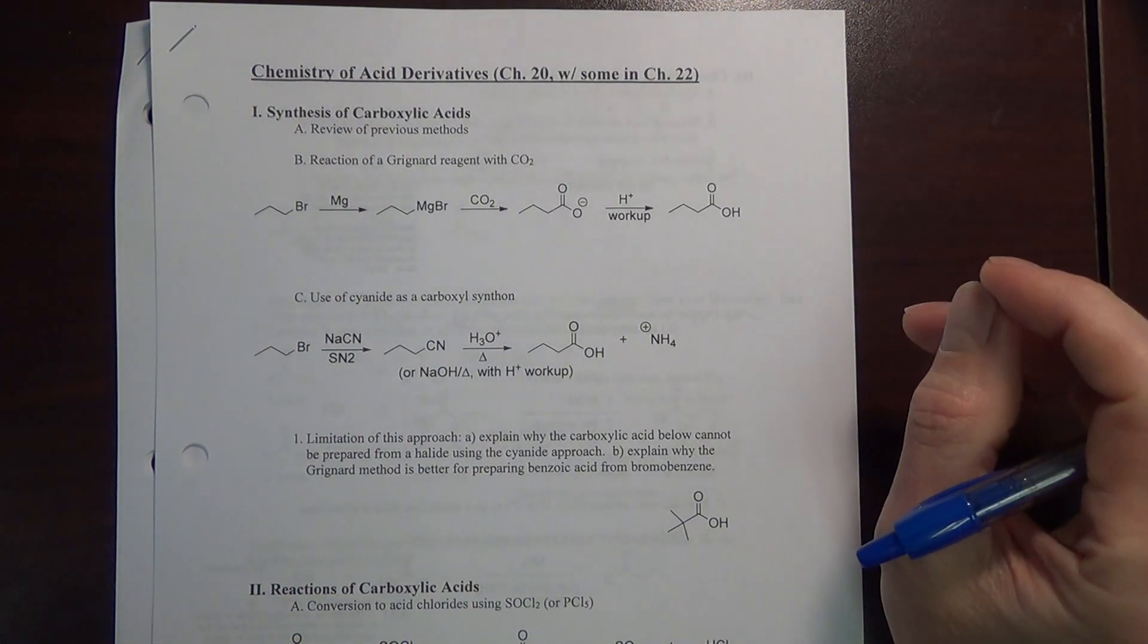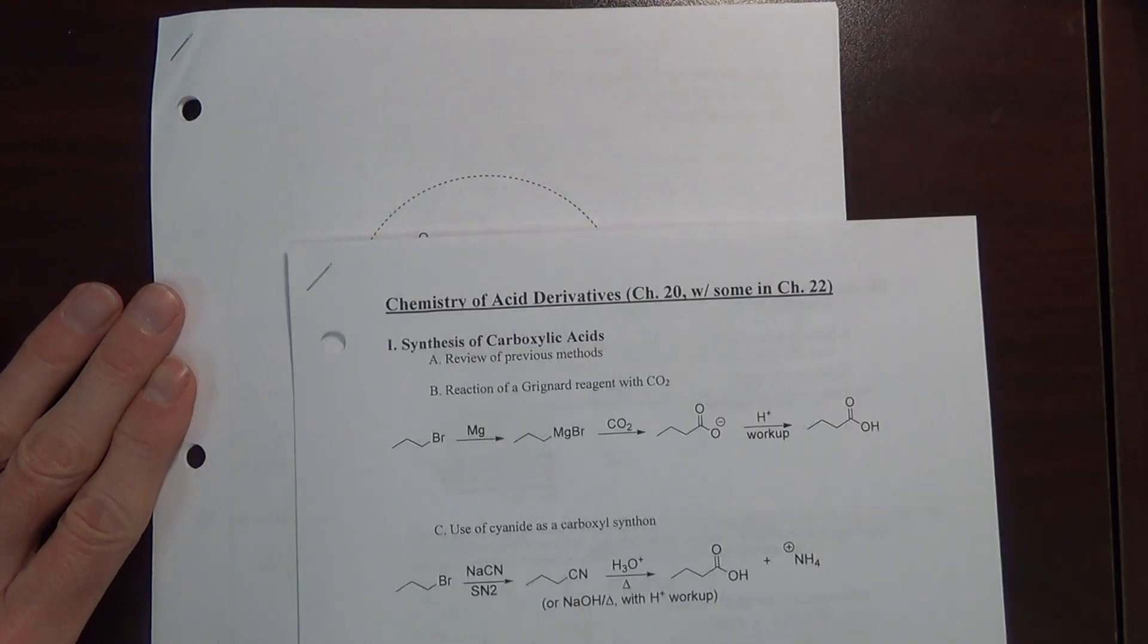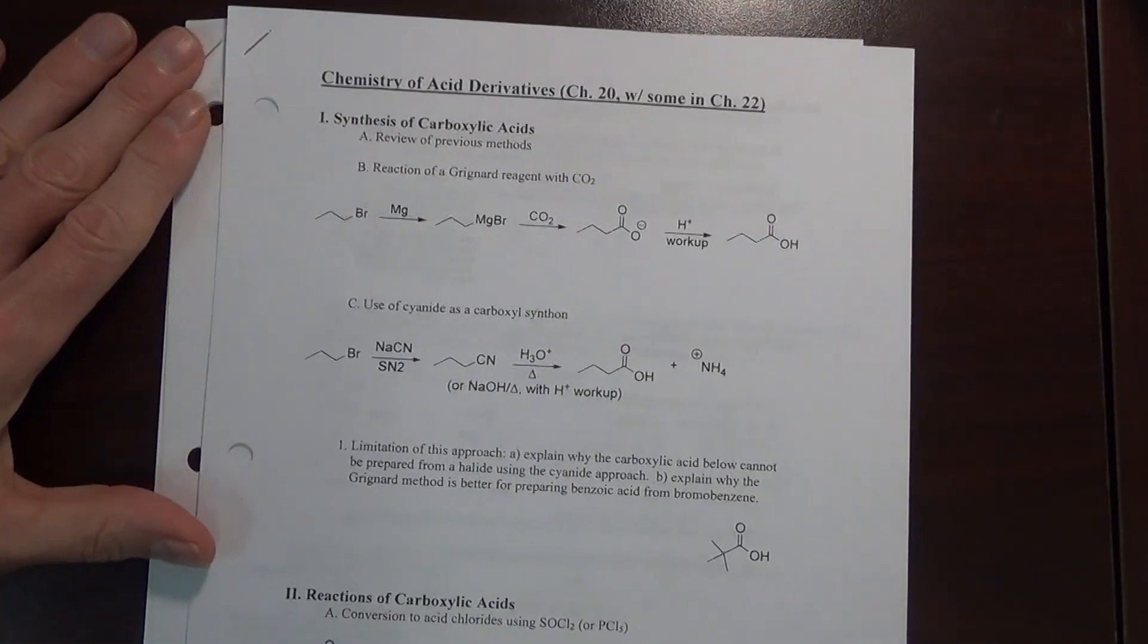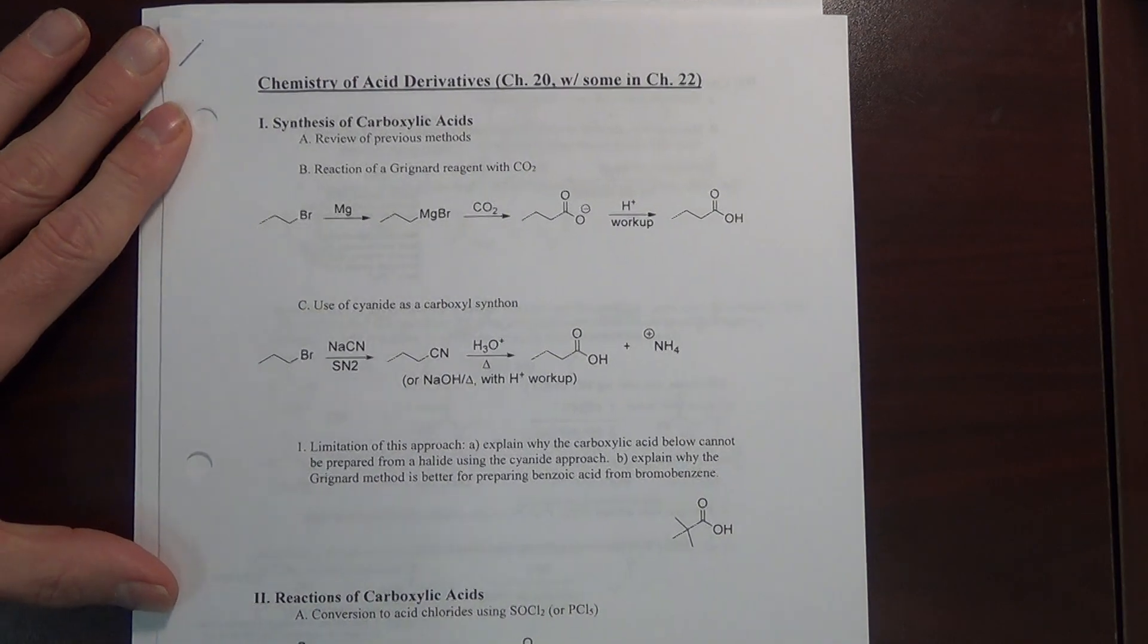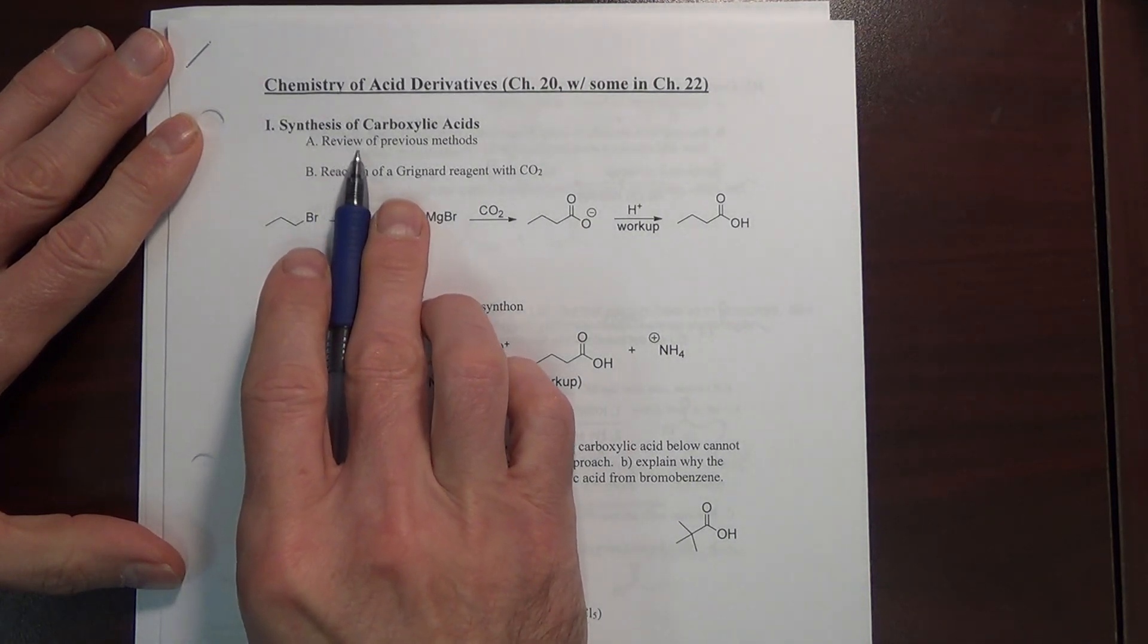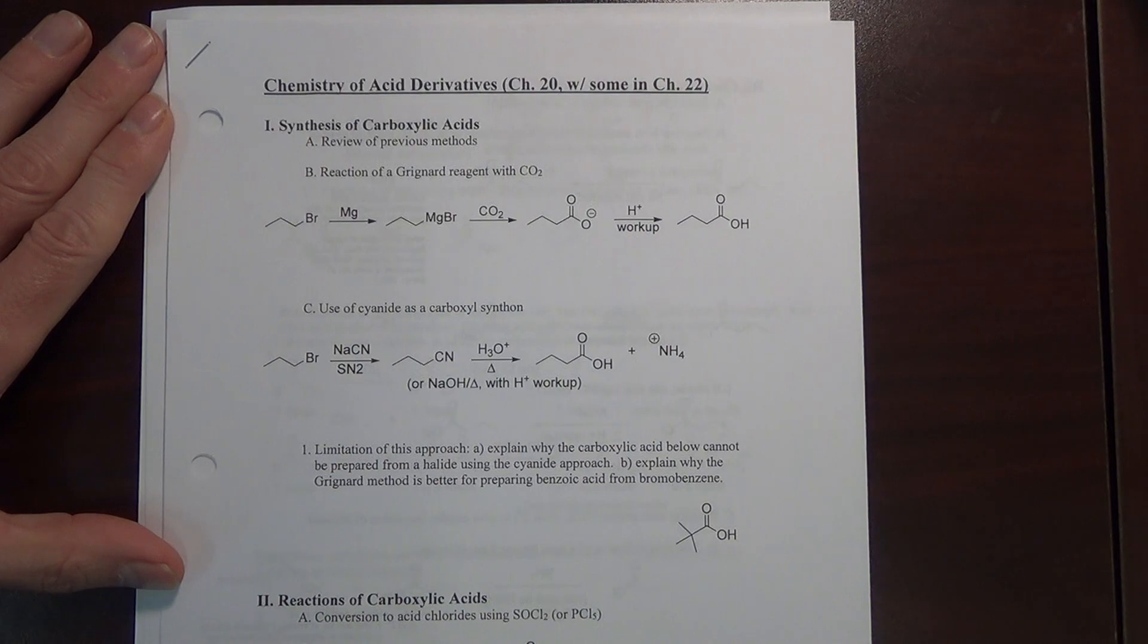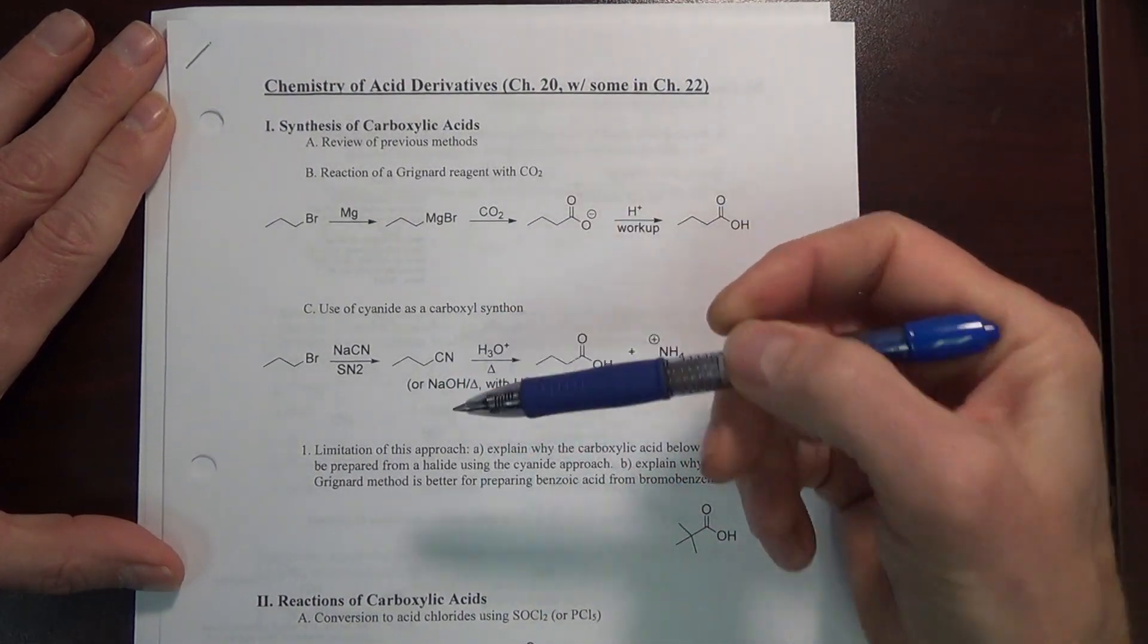Hi guys, in this video we will begin taking a look at the chemistry of acid derivatives. We have this outline here. I will also be referring to the other handout which has this cover page and the flow diagram there. On the outline we will begin with the synthesis of carboxylic acids. Before we start reacting carboxylic acids we first need to know how to prepare them.